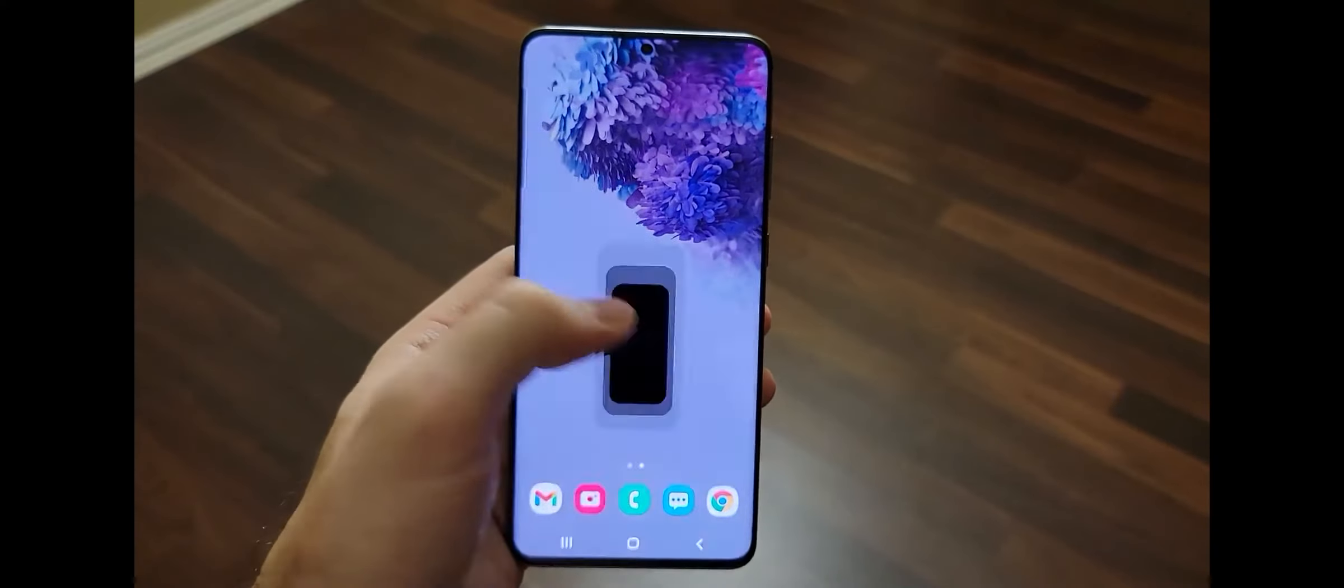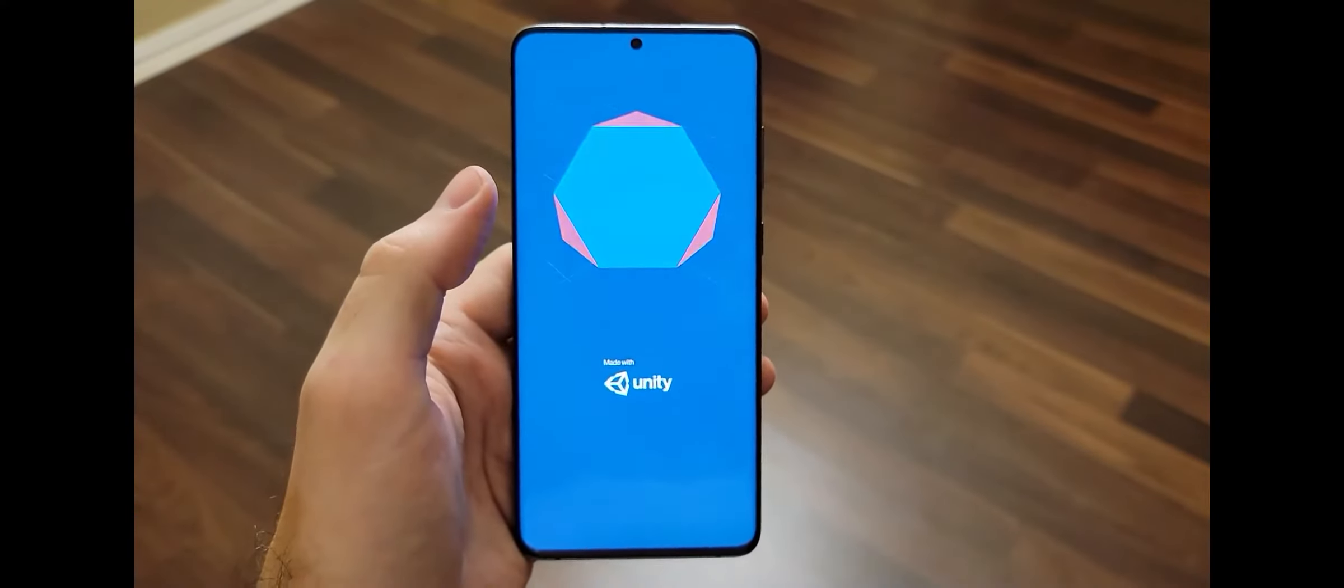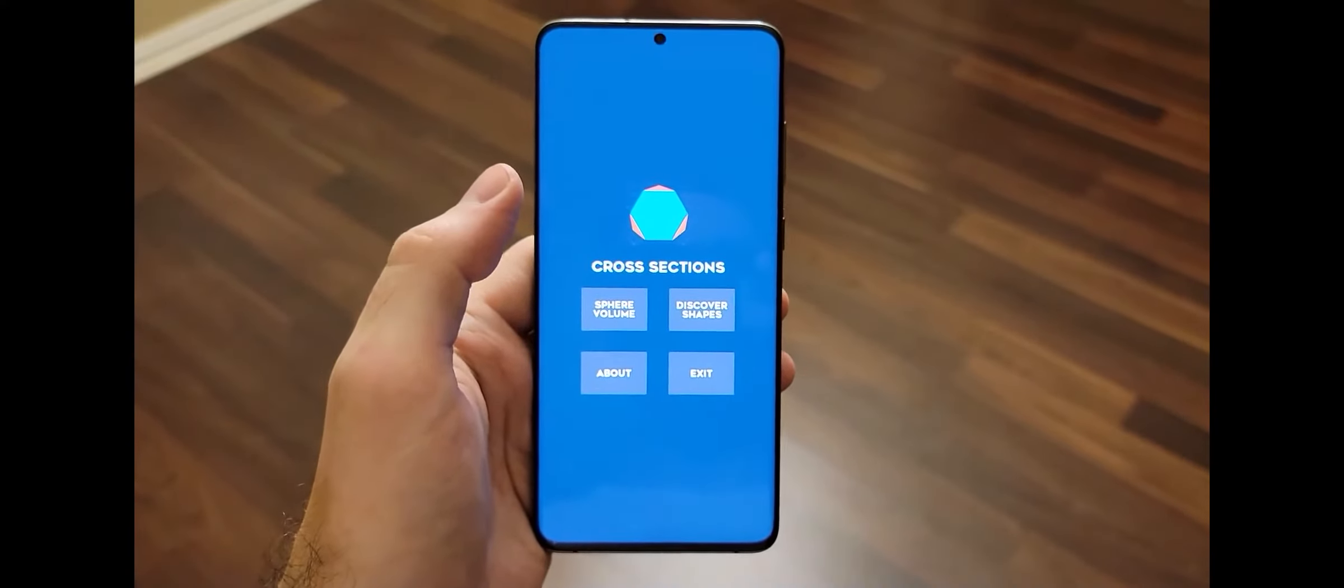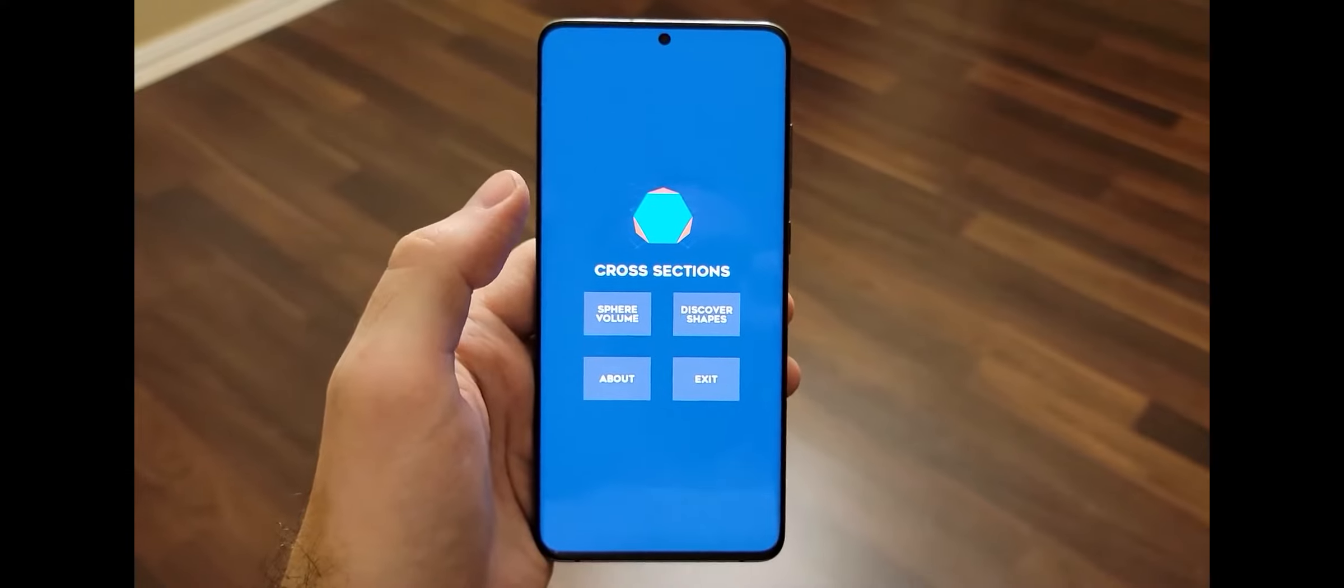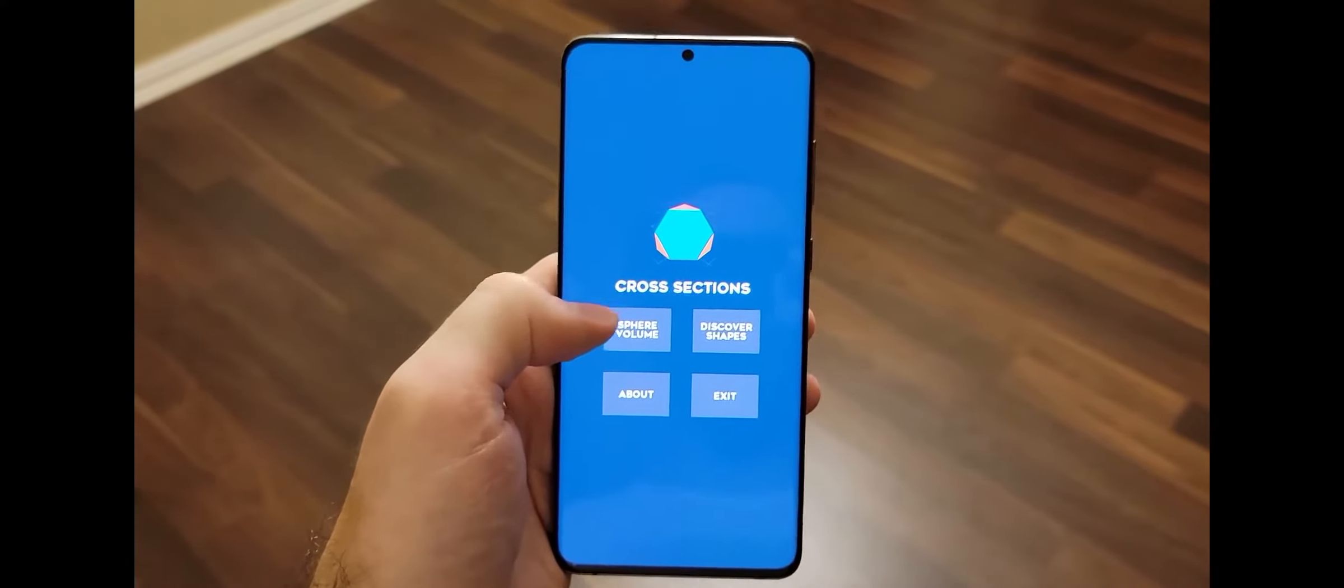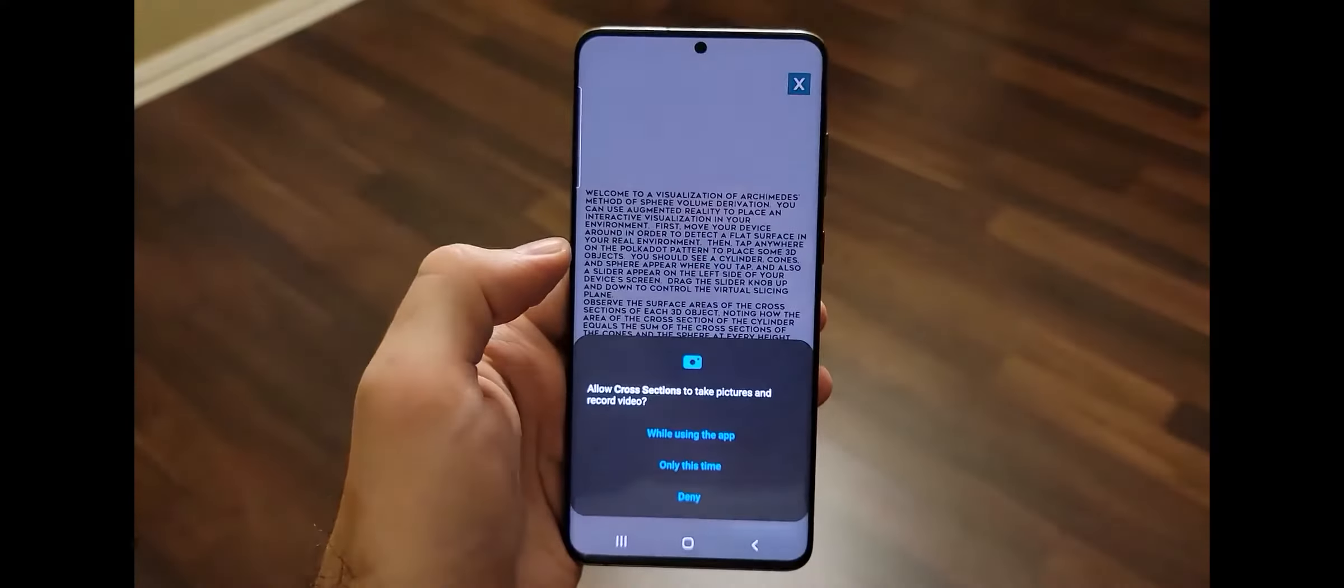Let's take a look. The Cross-Sections app uses augmented reality to convey some geometry concepts. It does this in two different scenes. Let's take a look at the first one, Sphere Volume, that shows us some objects.